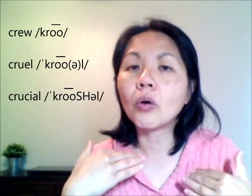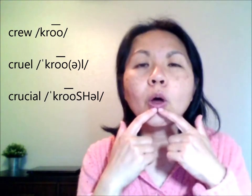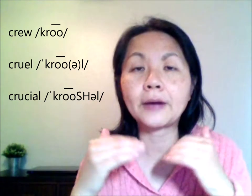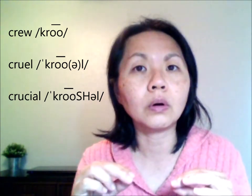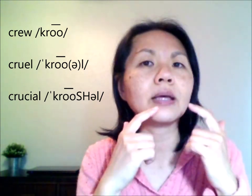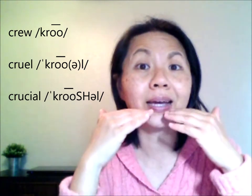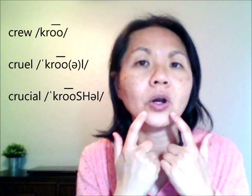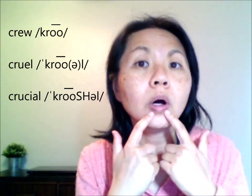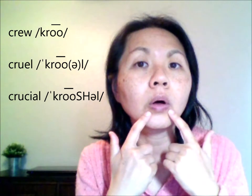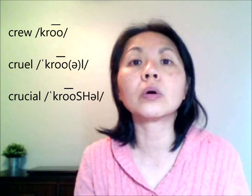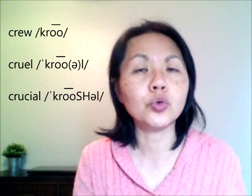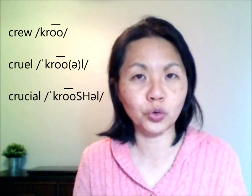When you say 'ooh', your lips are rounded and tight. But when you make the 'ul' sound, your lower lip is going to relax a little bit. So 'ooh', 'ul'. You notice when I say 'ul', my lower lip kind of relaxes — it is not as tense. So watch my lips: 'ooh', 'ul'. Cruel. Cruel.